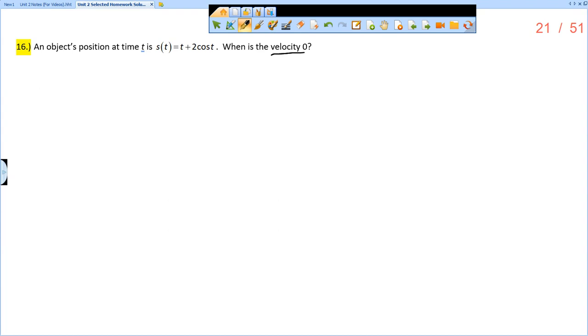First thing we have to know is that velocity is the derivative of position. So I want to know for what value of t is s prime of t equal to zero. So we want to find s prime of t, which is v of t.